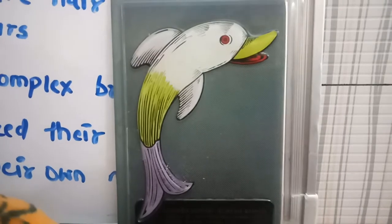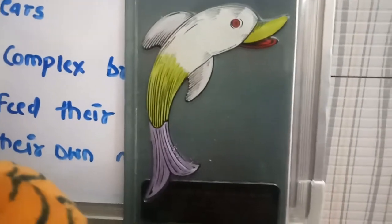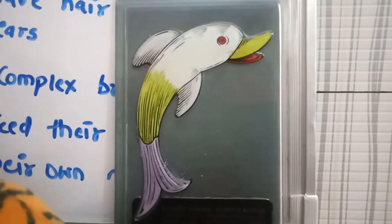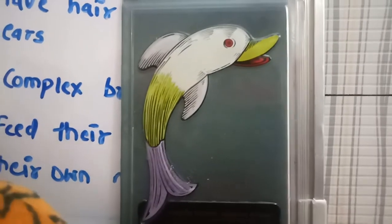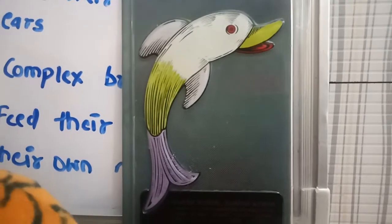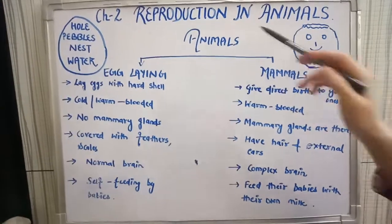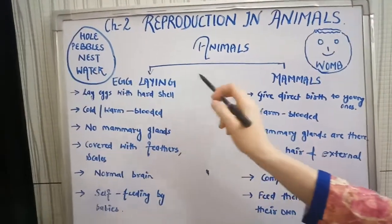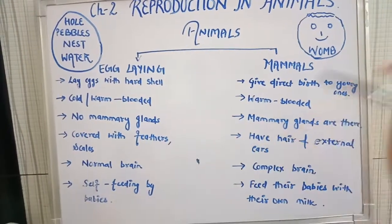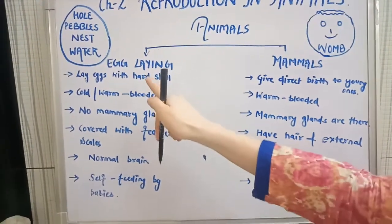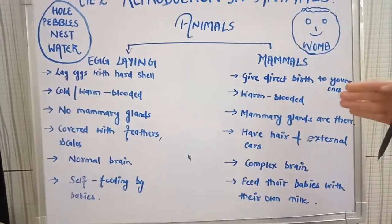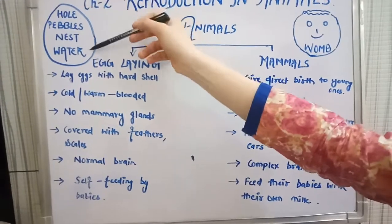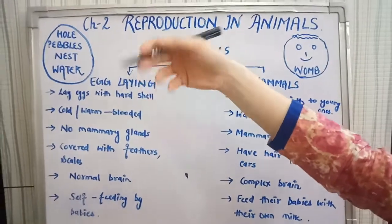This is the whole process of reproduction. We can't stop this process, otherwise we will be left with nothing in this world — just a barren land. Some animals lay eggs while others reproduce by giving birth directly. We have two different types of groups within reproduction in animals: first, egg-laying animals, and second, mammals. The first group lays eggs and the second group directly gives birth to its young ones.